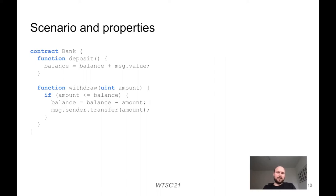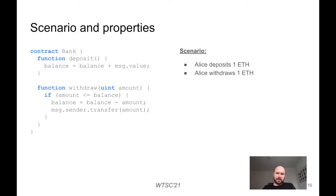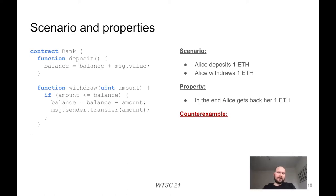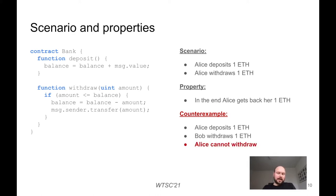In order to properly define the security of the contract, we need to define a scenario and properties. We can define the following scenario: first Alice deposits 1 ETH, then Alice withdraws 1 ETH, and the property to verify is that Alice gets back her 1 ETH. This property is false, because anyone can withdraw money. The counterexample is: Alice deposits 1 ETH, then Bob withdraws 1 ETH, and at that stage Alice can no longer withdraw the money.